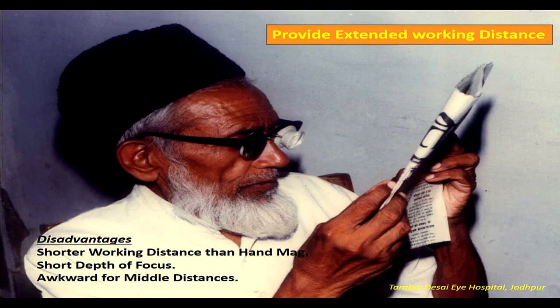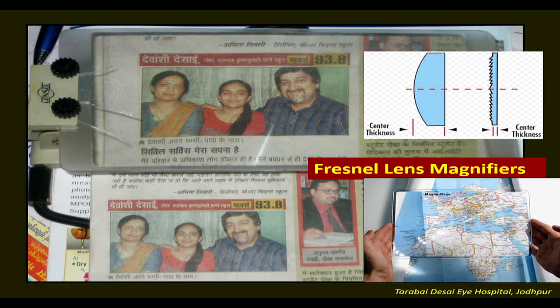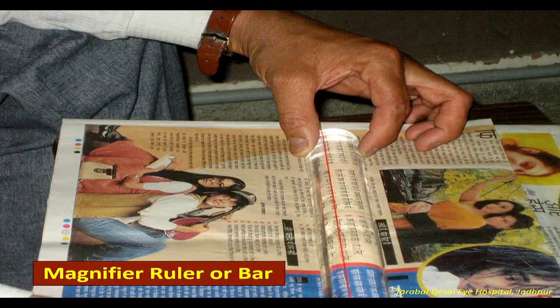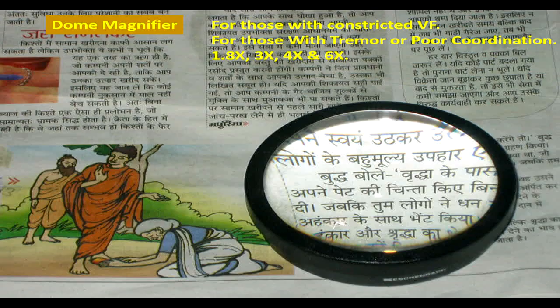The disadvantages of the telemicroscope are shorter working distance than handheld magnifiers, short depth of focus, and awkwardness for middle distances. A pencil lens magnifier can be used for magnifying newspaper images. A bar or ruler magnifier with a red line prevents skipping of reading material. A dome magnifier, for those with constricted visual field or tremors and poor coordination, is available in 1.8x, 3x, 4x, and 6x.